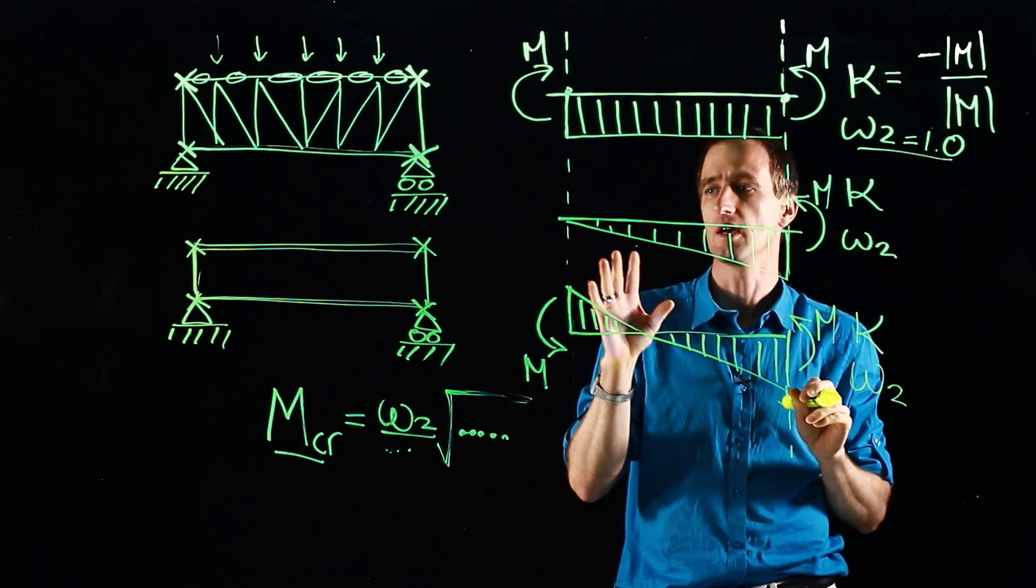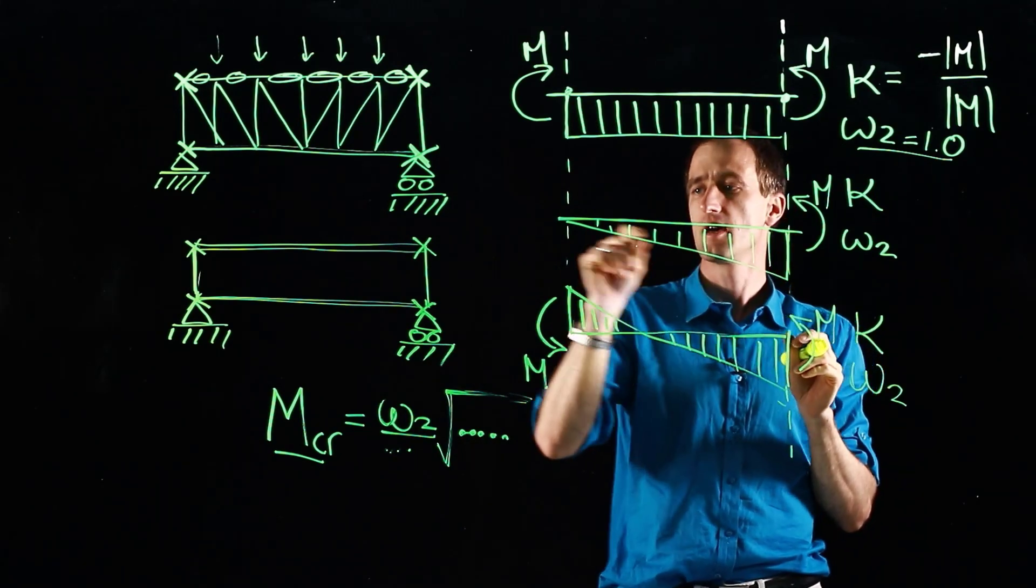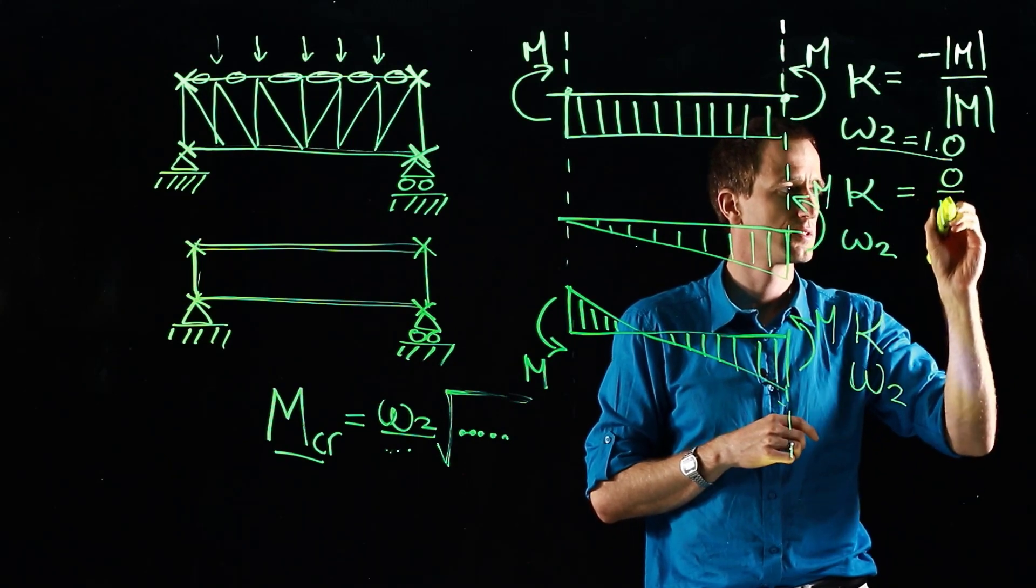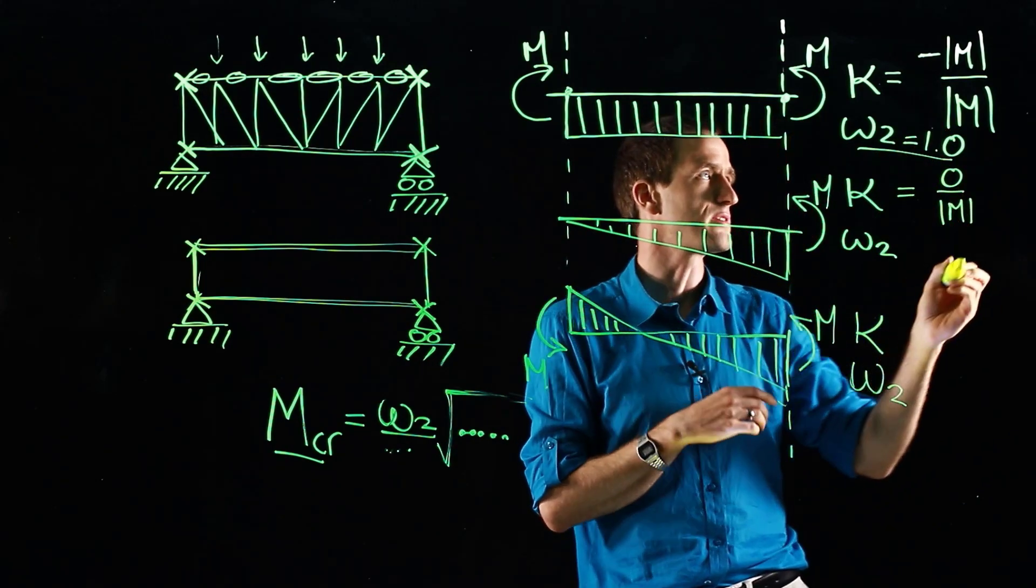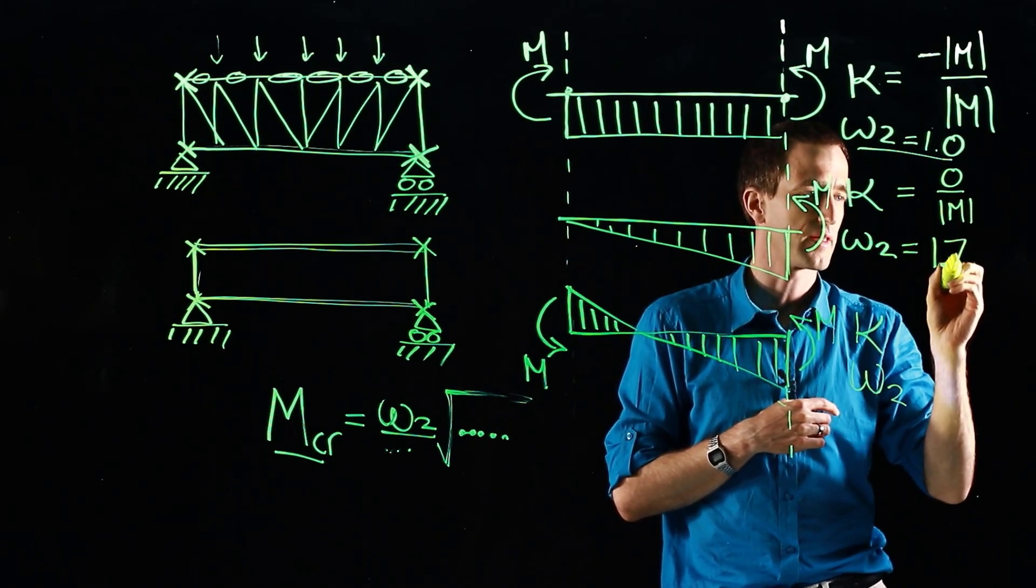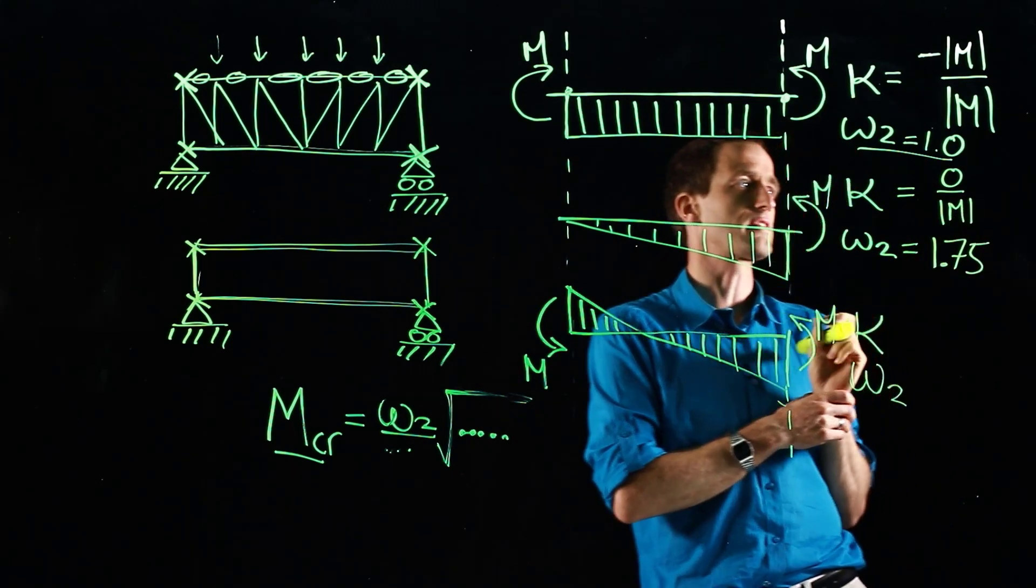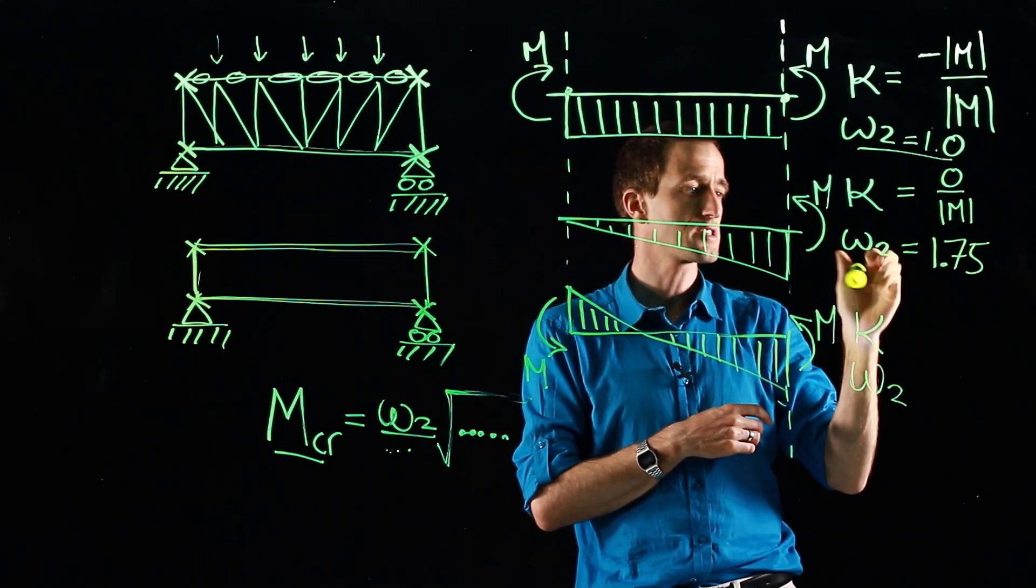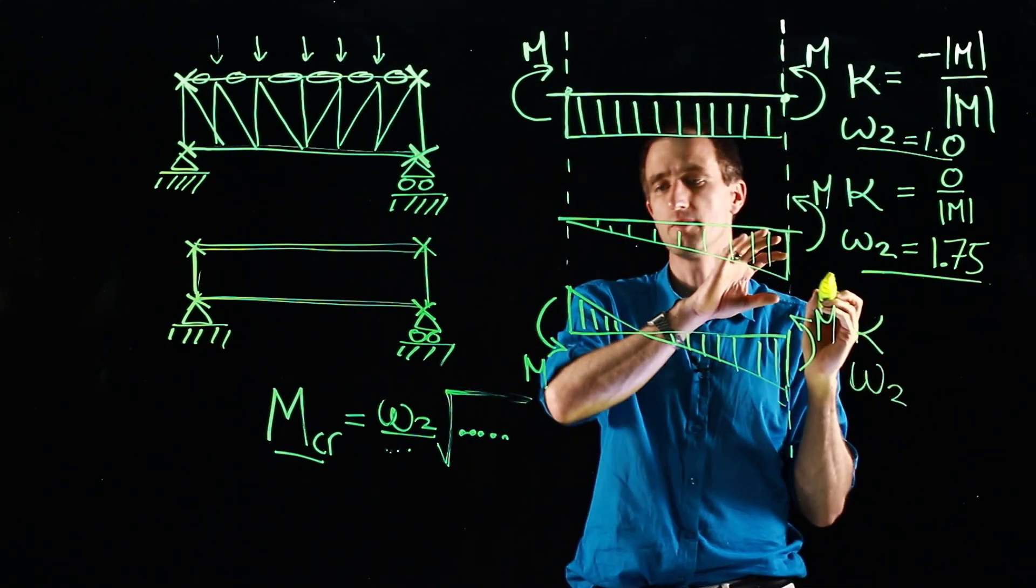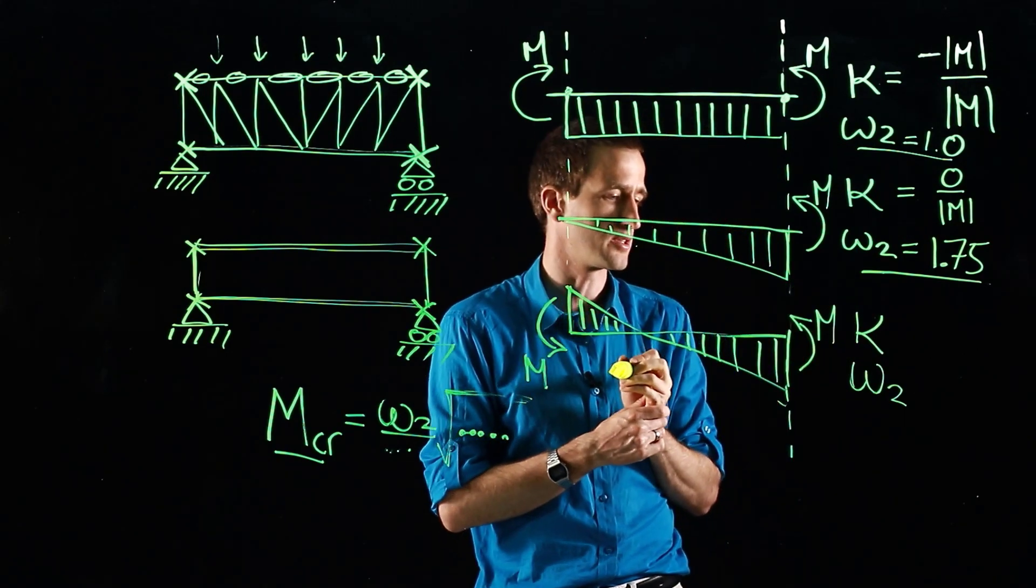Then we have now the case where there's moment on one side but not on the other. So that will just be zero. The kappa value will work out. And here we will find out that our omega-2 is 1.75. So our elastic moment increases by 75 percent because the moment is not consistent across the whole thing.